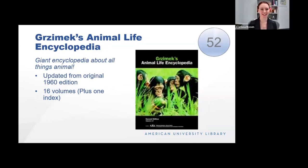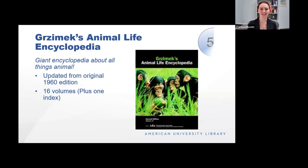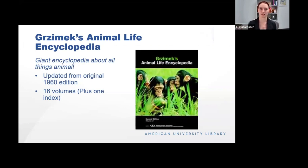Grzimek's Animal Life Encyclopedia is a giant encyclopedia about all things animal. It has been updated from the original 1960 edition in Germany. There are 17 total volumes organized by taxonomy — from lower metazoans and lesser deuterostomes to five whole volumes on mammals separated by order, family, and subfamily. This is a really cool way to learn about the whole life of planet Earth. It's not going to be like the bird database that's species-specific, but the subfamily level is really helpful.